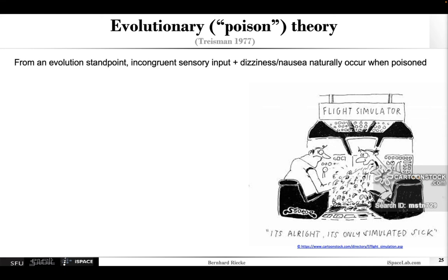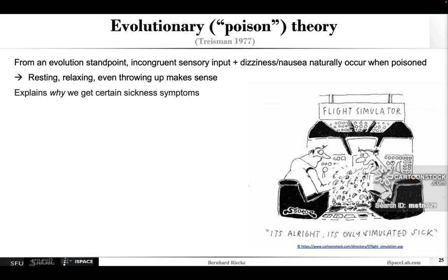Evolutionary or poison theory is another prominent one. This goes back to trying to understand where the symptoms come from. From an evolutionary standpoint, incongruent sensory input and dizziness or nausea naturally occurred when you ate or drank something you probably shouldn't have. So it makes sense that you want to rest, relax, and maybe even throwing up might actually make sense. This theory explains why we get certain sickness symptoms, but it doesn't have as clear implications. One suggestion might be that incremental exposure to new users could help.